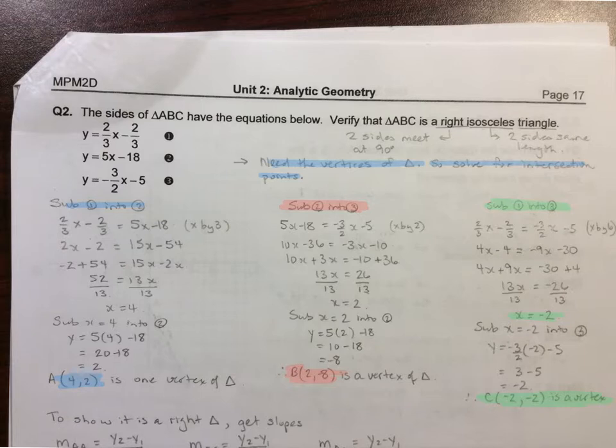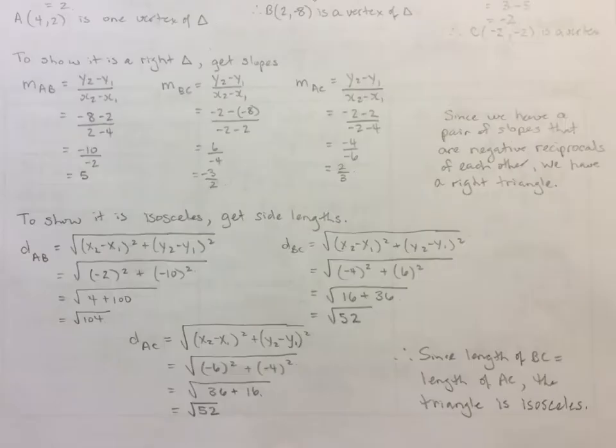Next, I showed that it was a right triangle by calculating the slopes using my points A, B, and C. When I calculated the slope of AB, I found it was a slope of 5. The slope of BC was negative 3 halves, and the slope of AC was 2 thirds. These two are negative reciprocals of each other. So since we have a pair of slopes that are negative reciprocals of each other, we have a right angle triangle.